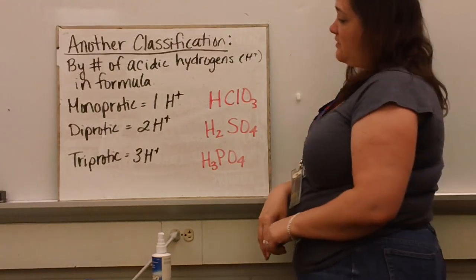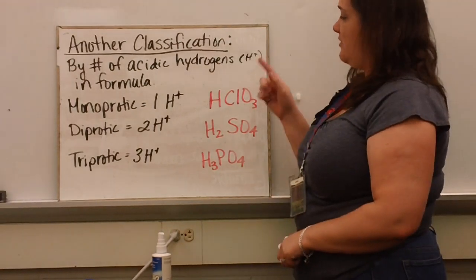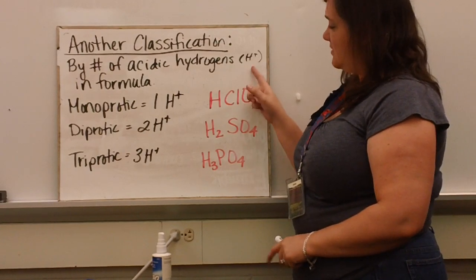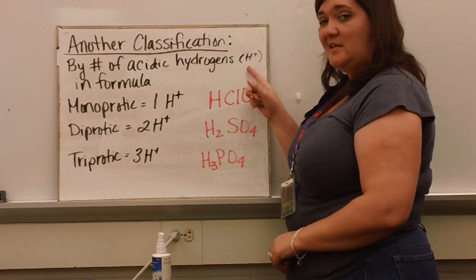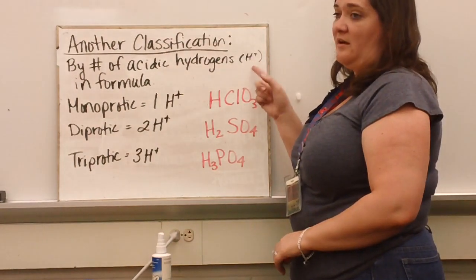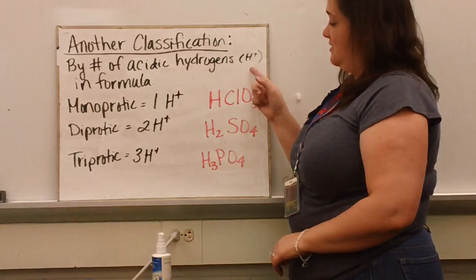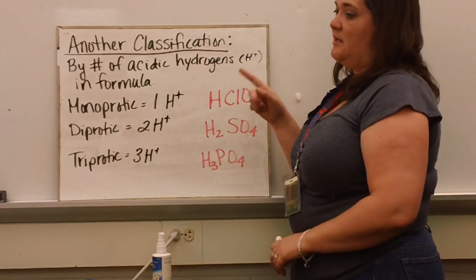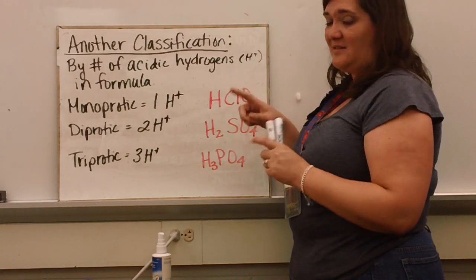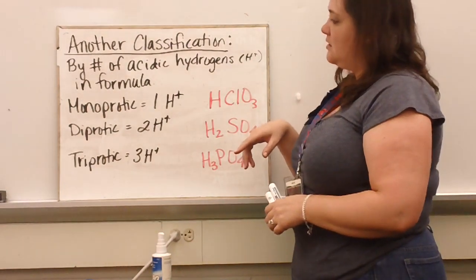Another way we can classify acids is by the number of hydrogen ions they have, which are acidic hydrogens. There are some acids which have hydrogen in them, like acetic acid, but the only ion that is acidic hydrogen is the one in the front. The three hydrogen ions within the acetate ion are not acidic.